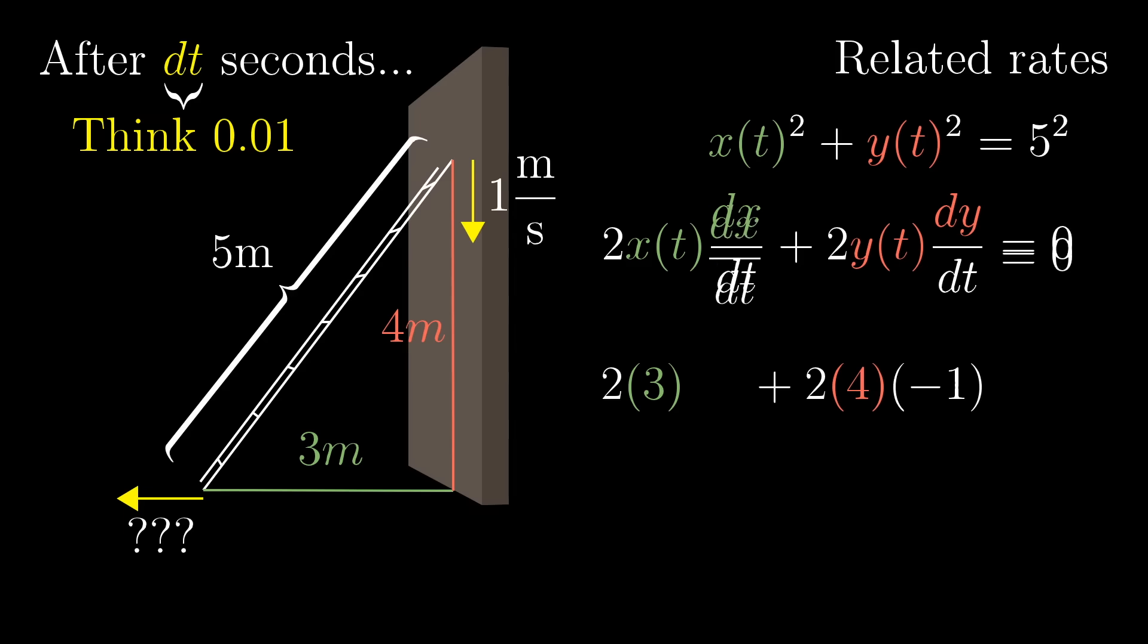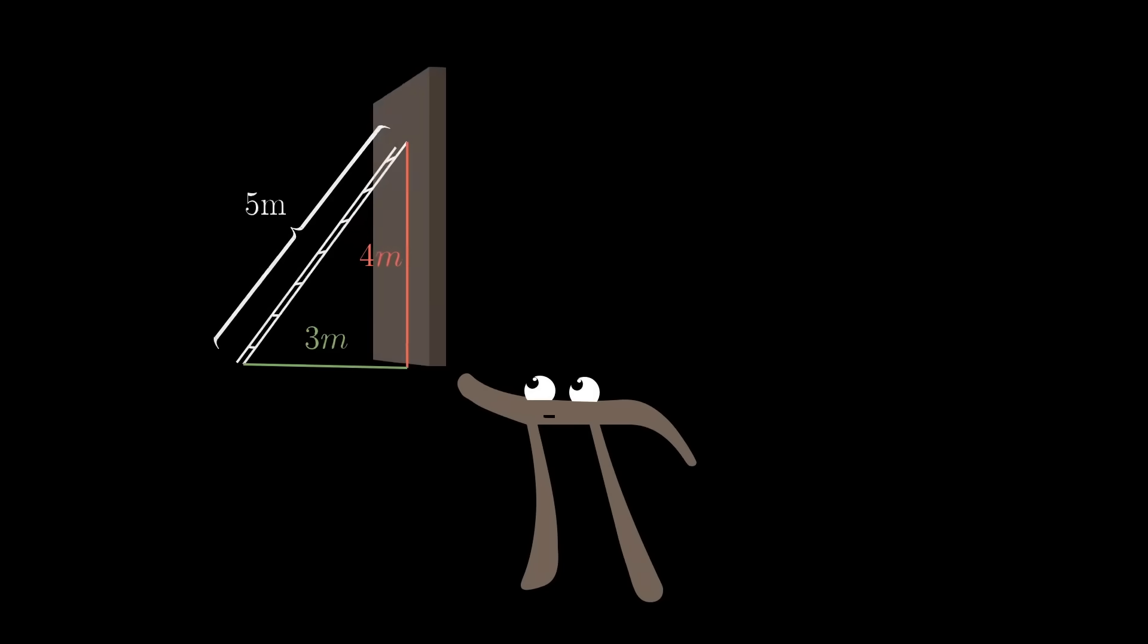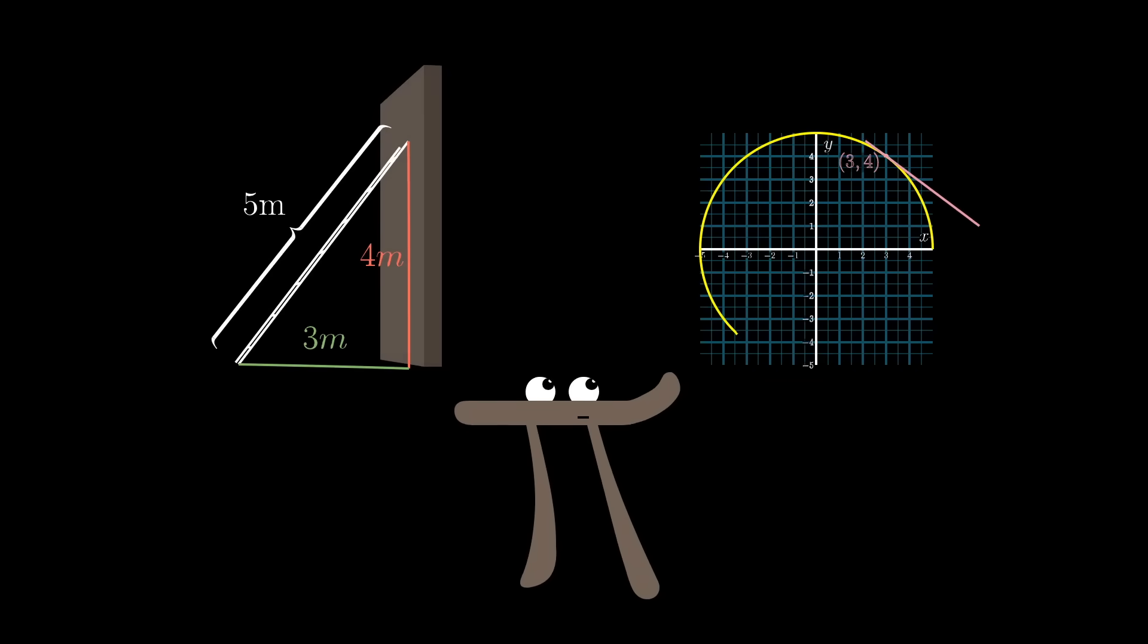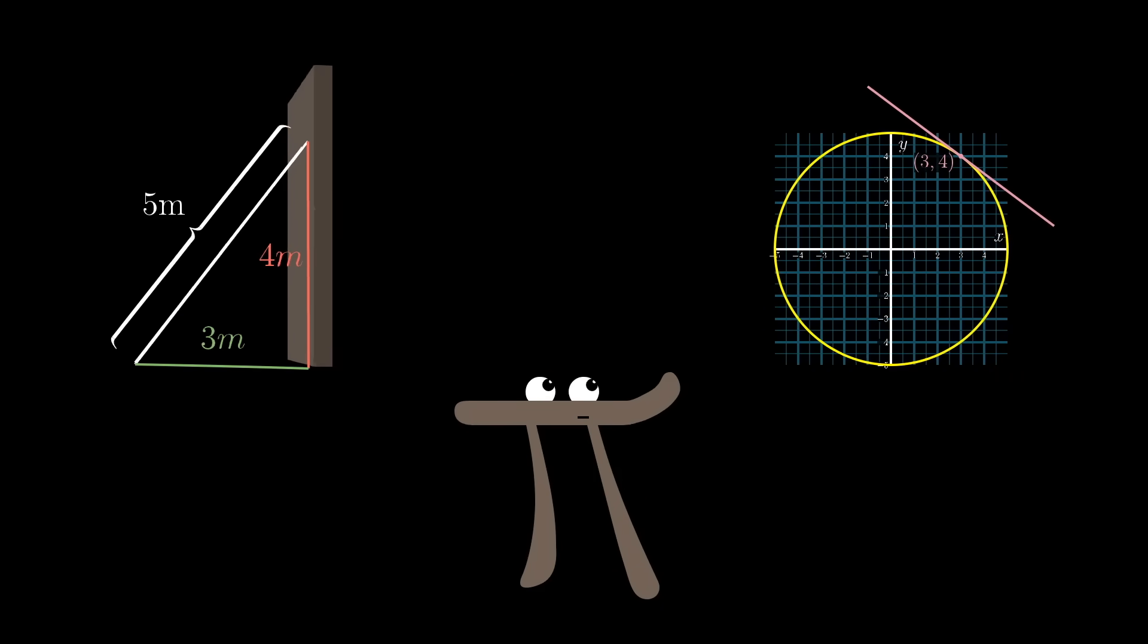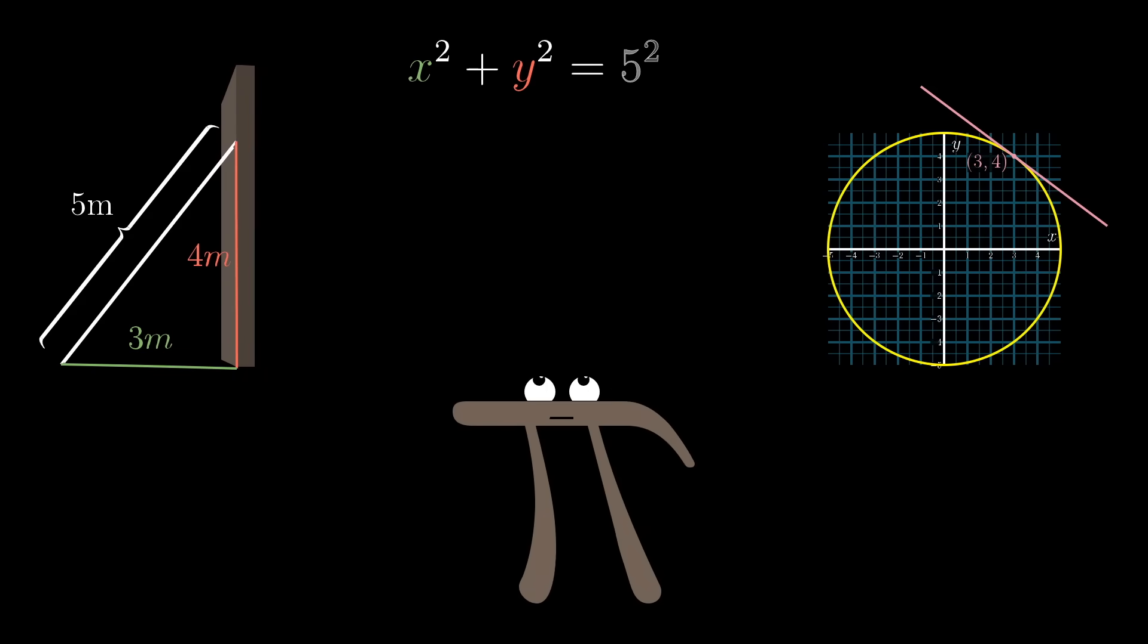Now, this gives us enough information to isolate the derivative, dx/dt, and when you work it out, it comes out to be 4/3 meters per second. The reason I bring up this ladder problem is that I want you to compare it to the problem of finding the slope of a tangent line to the circle. In both cases, we had the equation x² + y² = 5², and in both cases, we ended up taking the derivative of each side of this expression.